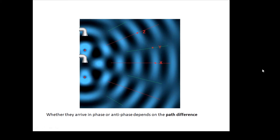At point Z the waves also arrive in phase, but they haven't traveled the same distance. The difference between the distances — the path difference — is equal to one wavelength. So maybe one has traveled seven wavelengths and the other eight wavelengths. For point Y, where we get destructive interference, anywhere along that green line the path difference will be half a wavelength.